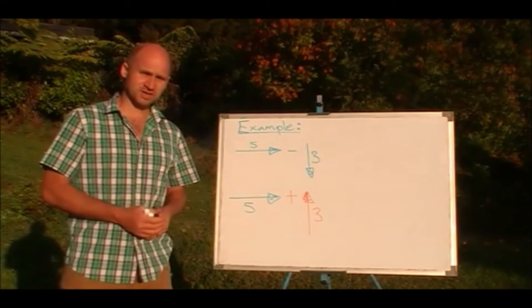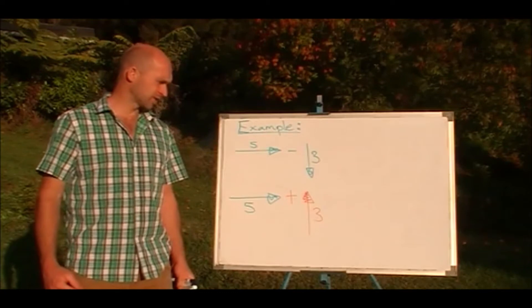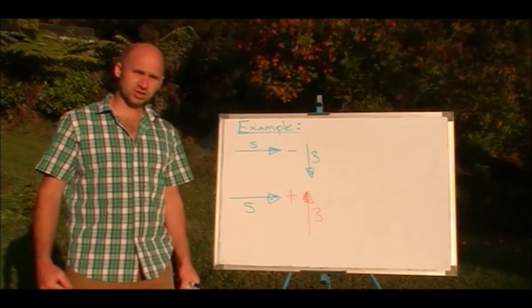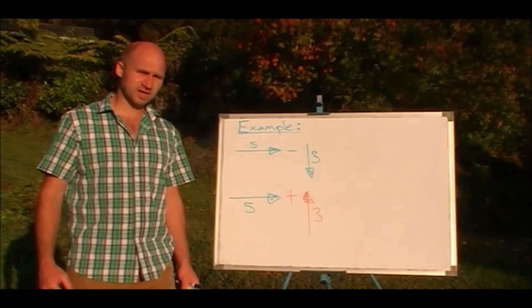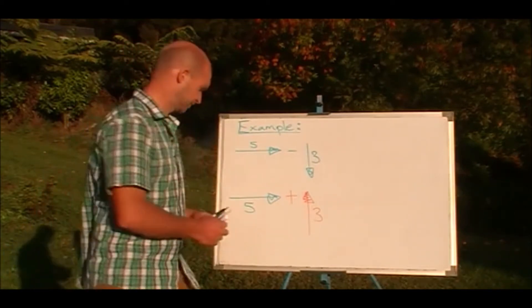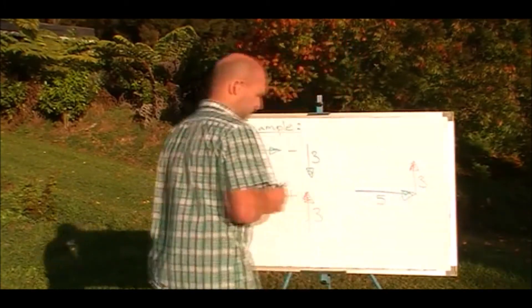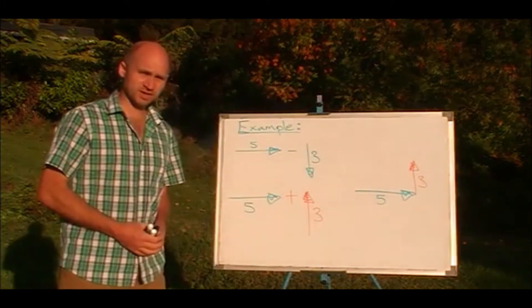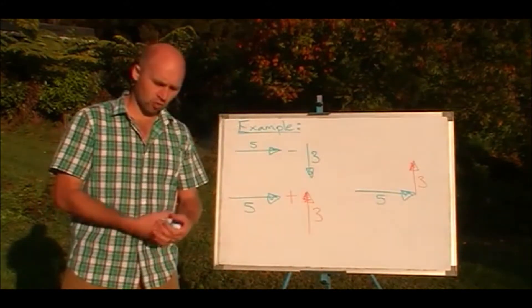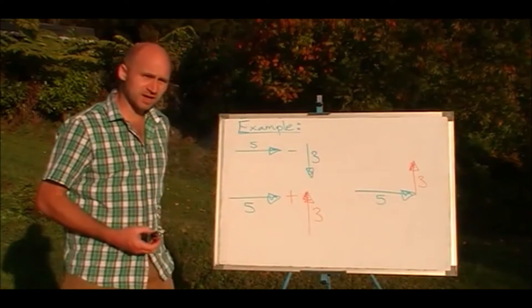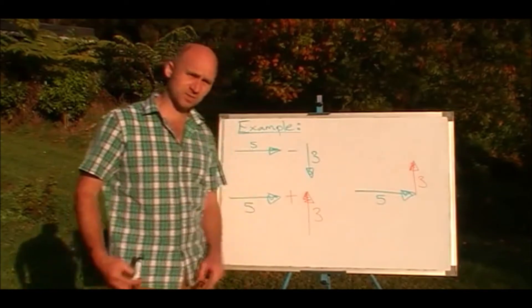And now you can see we've turned it into an addition problem, a very familiar looking addition problem. 5 plus 3. Let's join those together and see what we get. Two vectors joined together, nose to tail. And we're going to draw the resultant vector from the tail of the first one up to the nose of the last one.